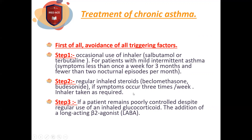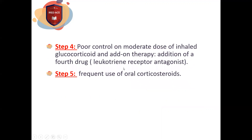If the patient is not in control, we add a third drug: a long-acting beta-2 agonist inhaler, such as formoterol or salmeterol. If still not in control, we add a fourth drug. If still not in control, we use systematic steroids in a long course.